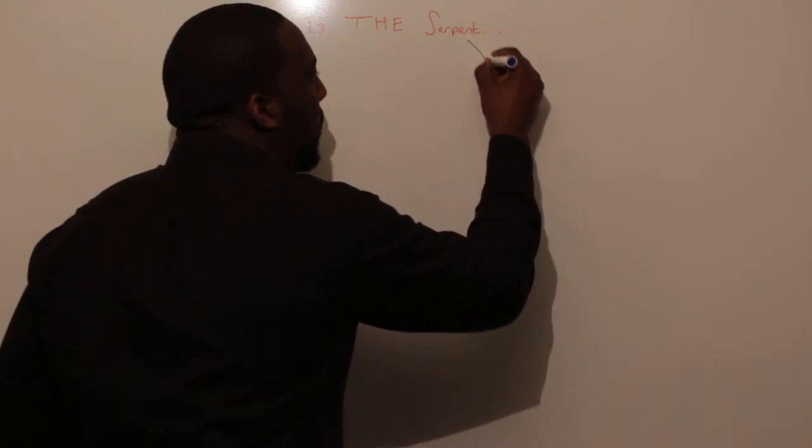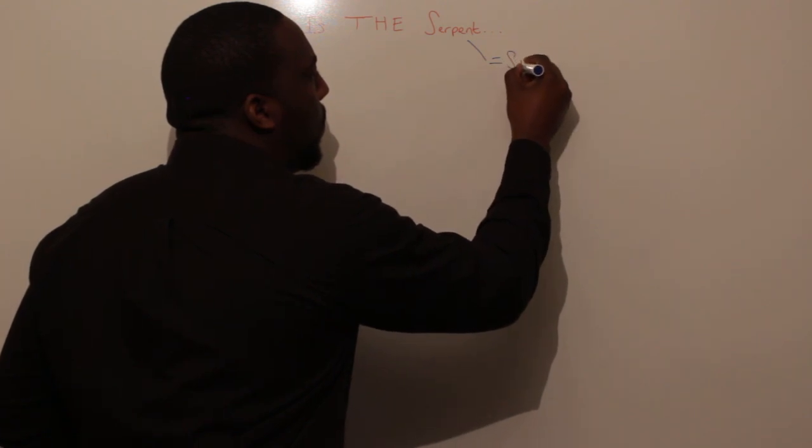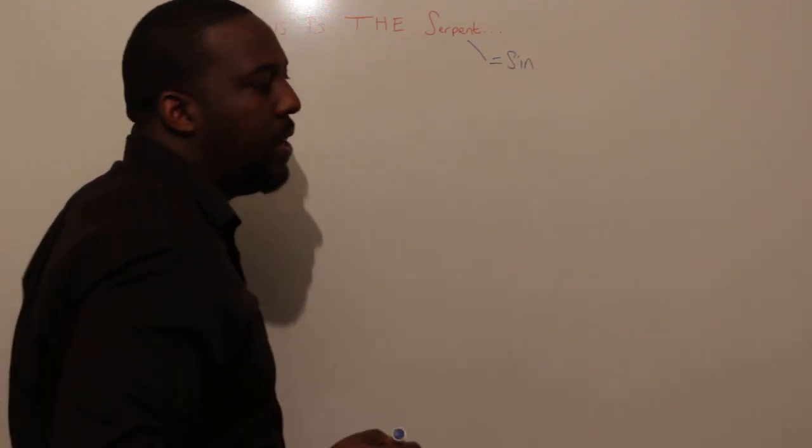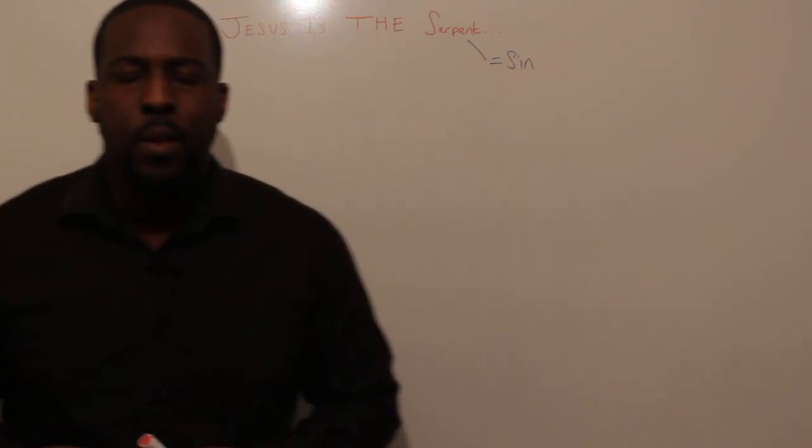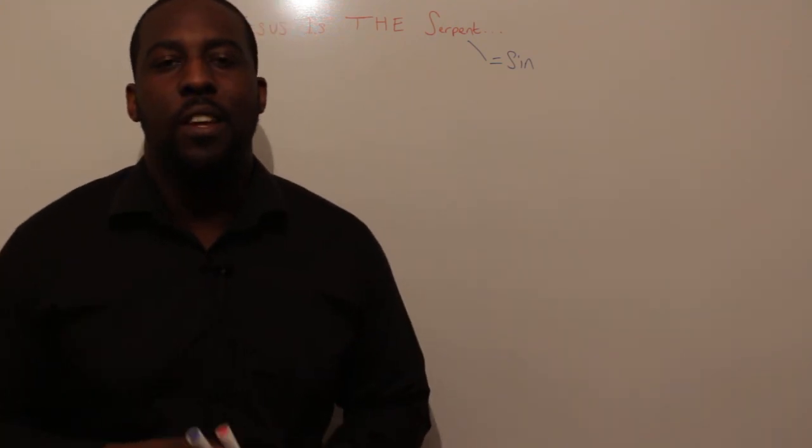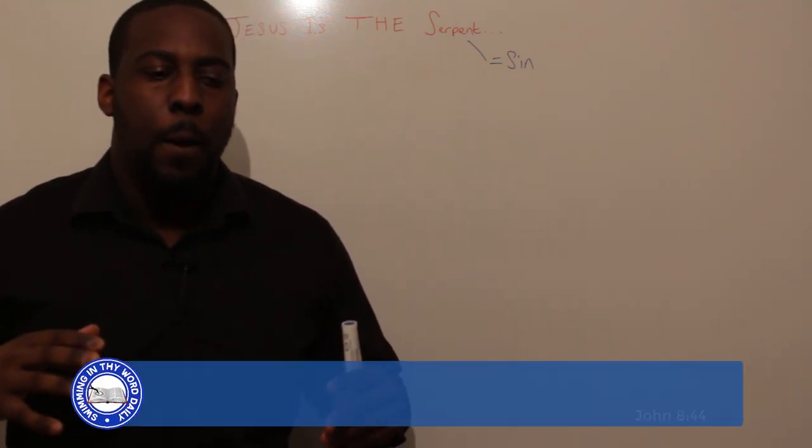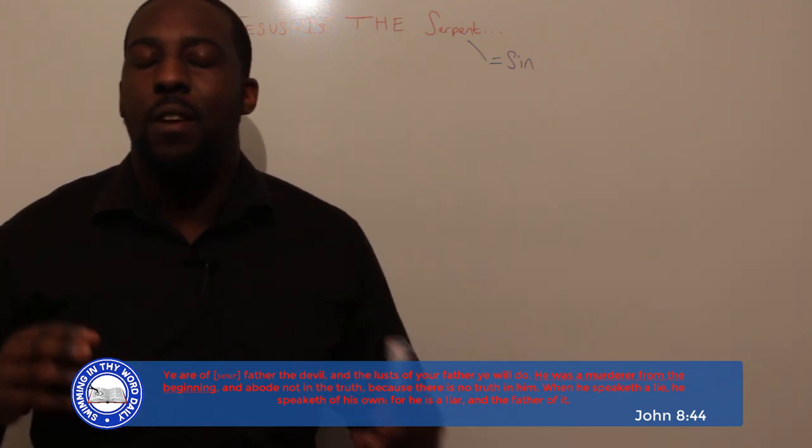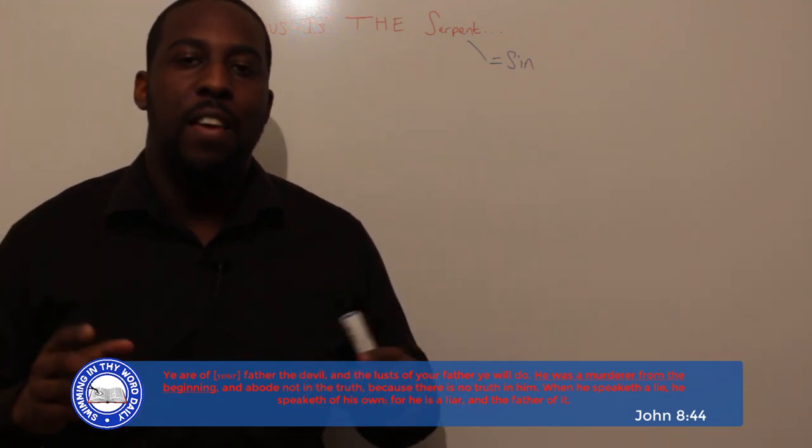Even going back to the Garden, when Jesus was rebuking the Pharisees, if I remember correctly, one of the things he basically said was he was a liar even from the beginning. I believe it's John 8—he was a liar even from the beginning.